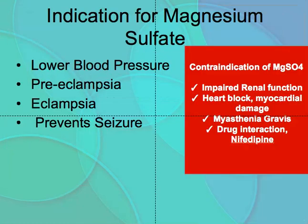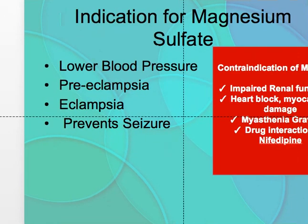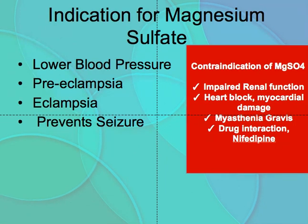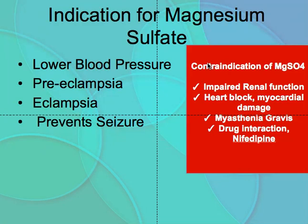Let's look at some indications for magnesium sulfate. Magnesium sulfate lowers blood pressure, is used to treat preeclampsia and eclampsia, and helps to prevent seizure disorders.